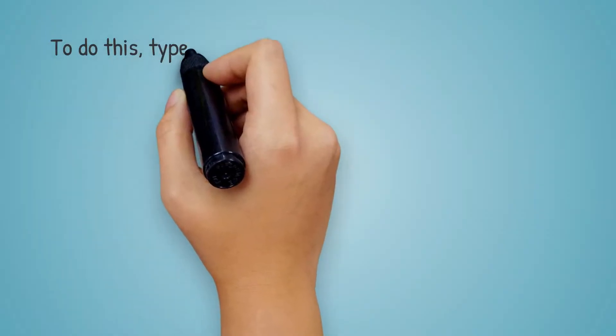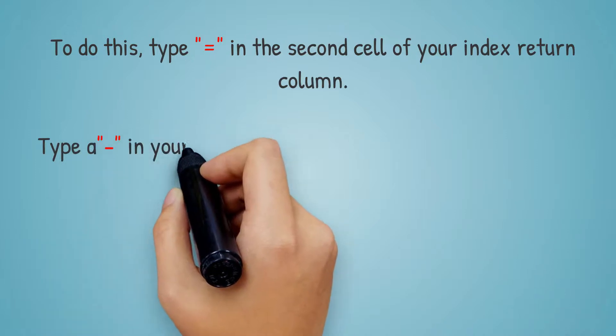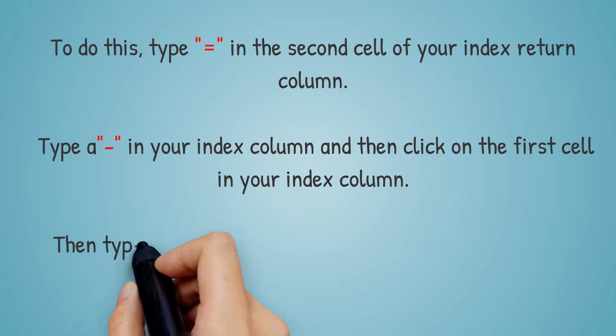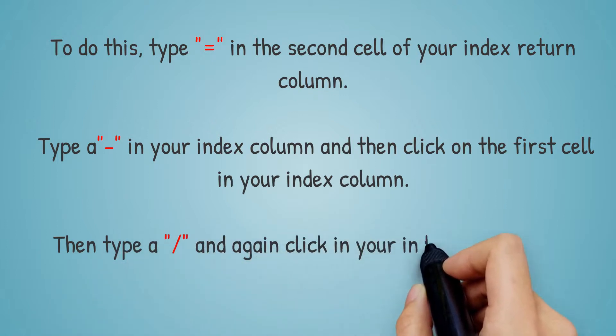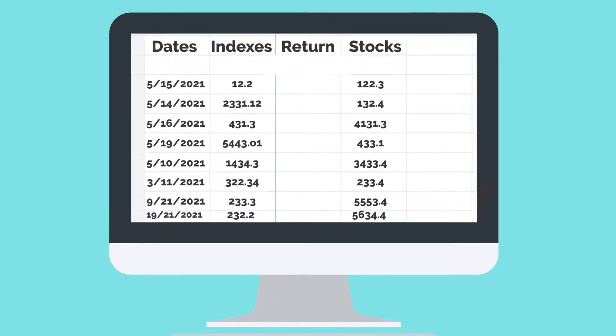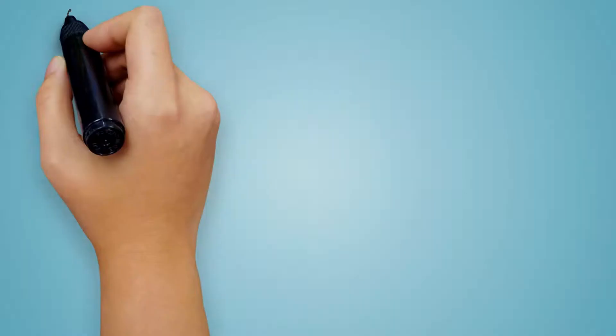To do this, type equals in the second cell of your index return column. Type a dash in your index column and then click on the first cell in your index column. Then type a forward slash and again click on the index column again. Hit return or enter. You will leave your first cell blank since return is a calculation over time. The equation might look like this: equals open brackets B4 minus B3 close brackets divided by B3.